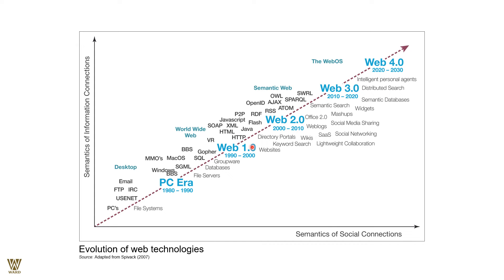Web 2.0 spanned roughly 2000 to 2010, bringing XML, JavaScript, Flash, OWL, OpenID, AJAX, Atom, and SQRL. From 2010, Web 3.0 introduced semantic search, blogs, social media, and keyword searching, which exploded in adoption. Now we are experiencing Web 4.0, where artificial intelligence, machine learning, and cloud computing enable machines to take logical decisions on behalf of human beings.